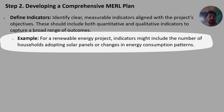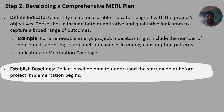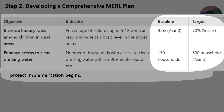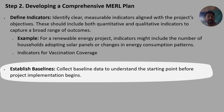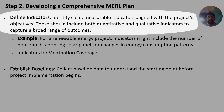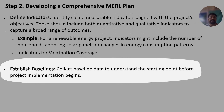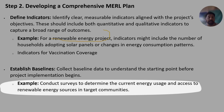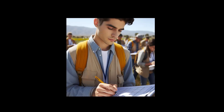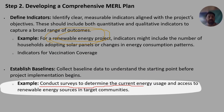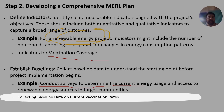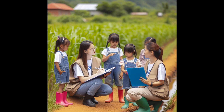For example, if you are working on a renewable energy project, your indicators might include the number of households adopting solar panels and changes in energy consumption. Next, establish baselines by collecting baseline data — a starting point — before project implementation begins. For the energy project, conduct surveys to determine current energy usage and access to renewable energy sources. For a health vaccination project, collect baseline data on current vaccination rates.